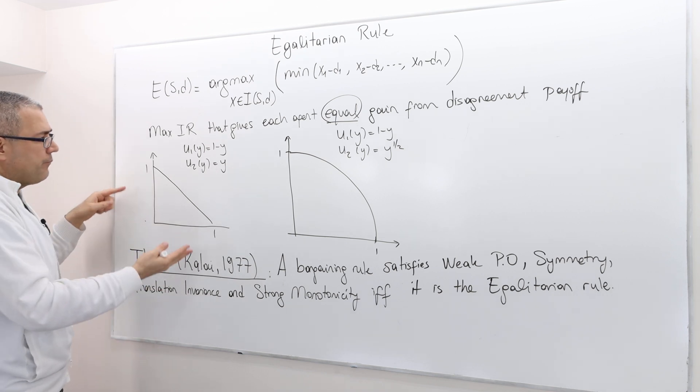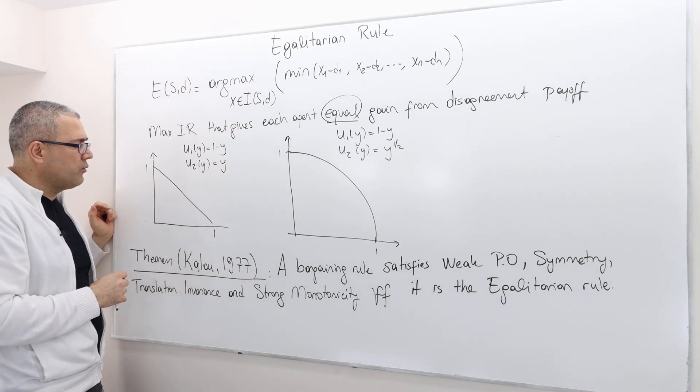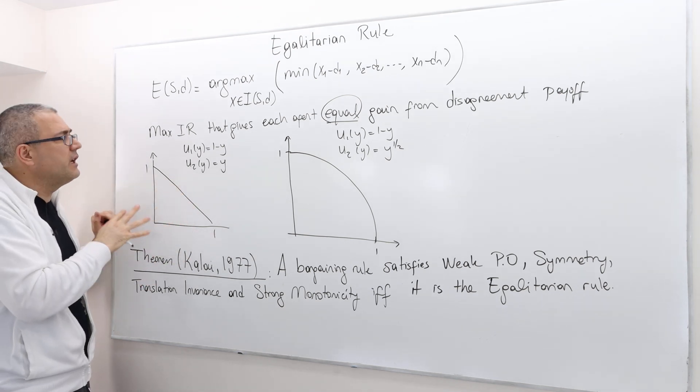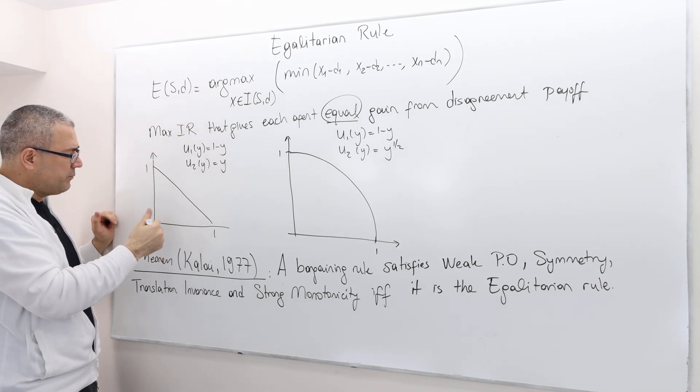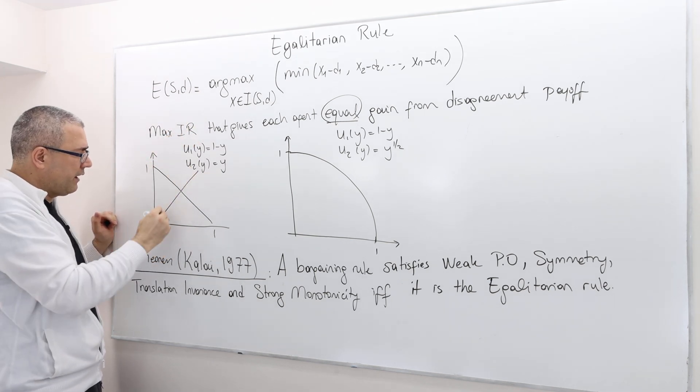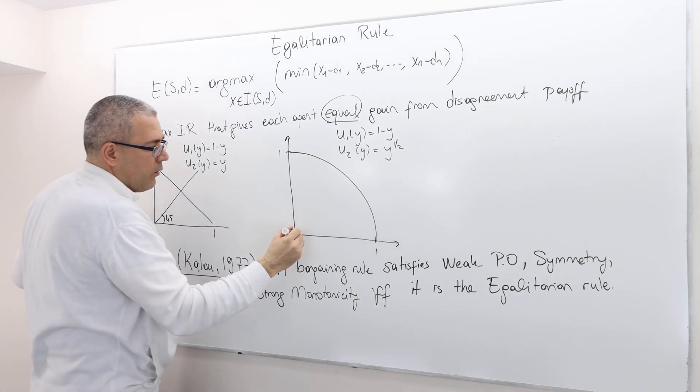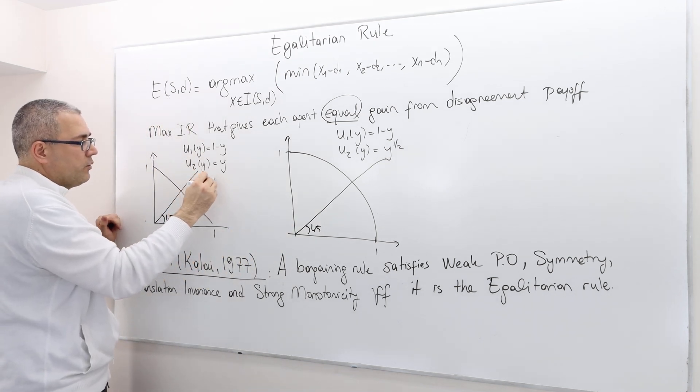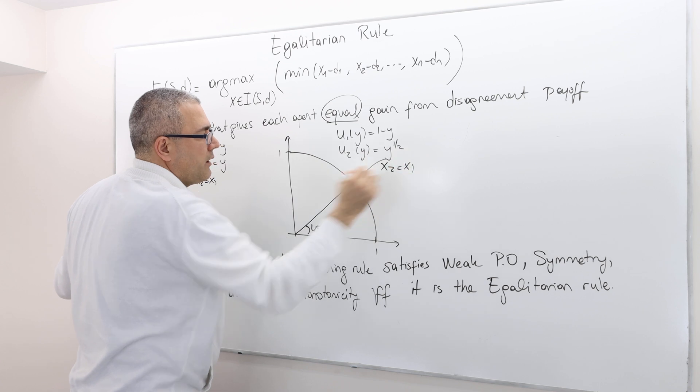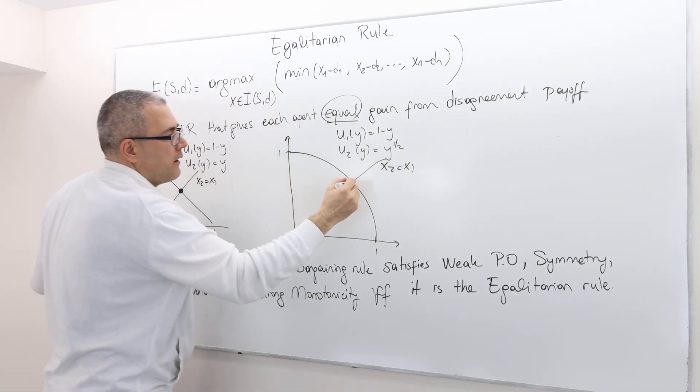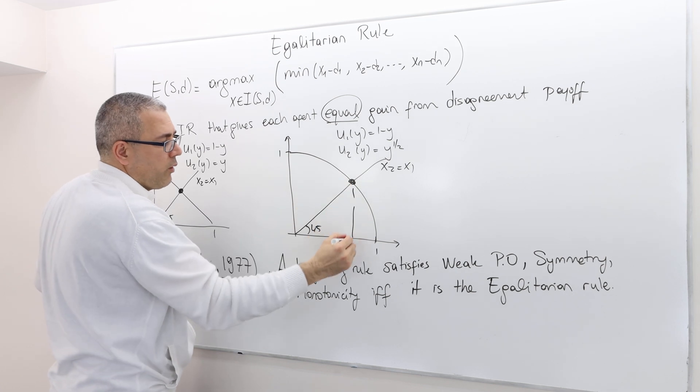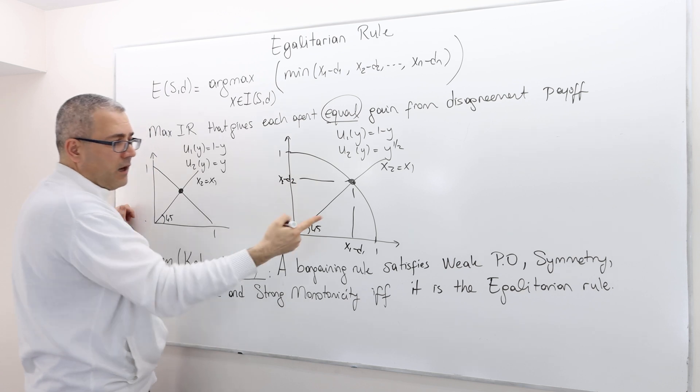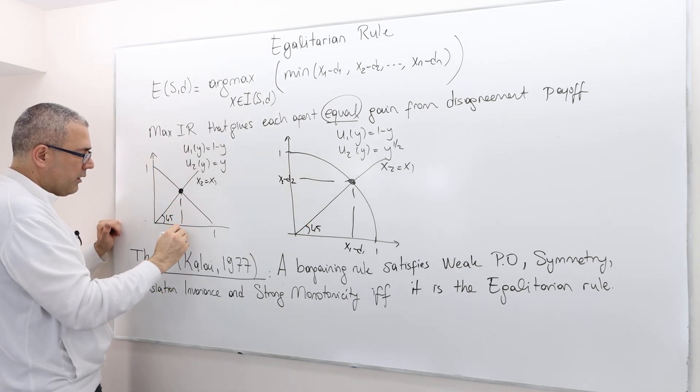So I think it makes more sense when we look at those simple examples we keep repeating for other bargaining rules. Geometrically, what the egalitarian rule does is basically it draws a 45 degree line over the bargaining set. So this is 45 degree line. And obviously, that is X2 equals X1 line. Same here. X2 equals X1 line. And then basically picks this point because this is the point where X1 minus D1 and X2 minus D2 are the same. And same here. X1 minus D1, X2 minus D2 are the same.